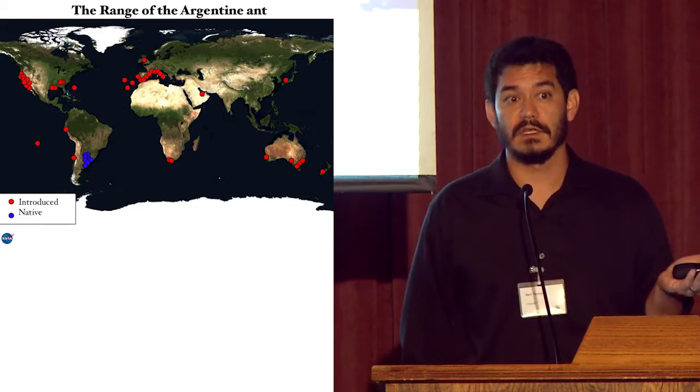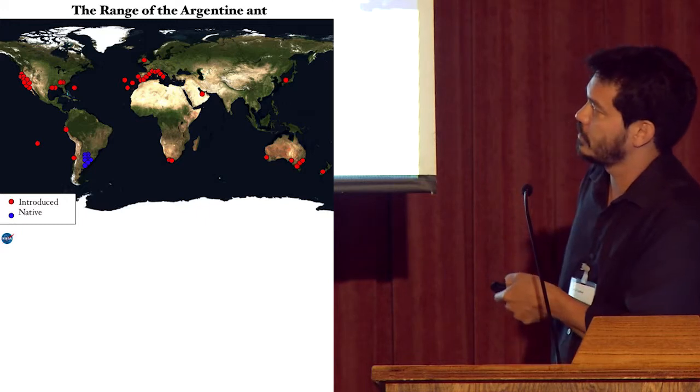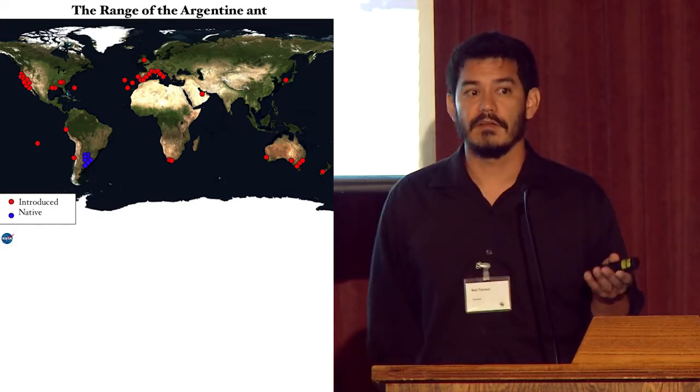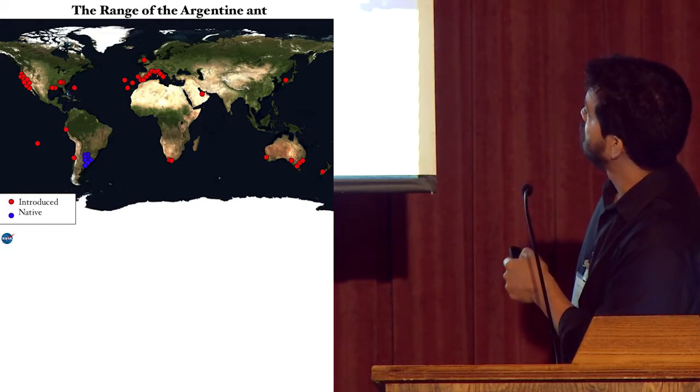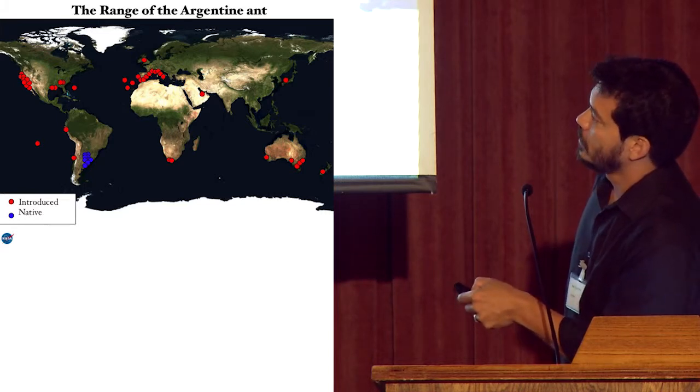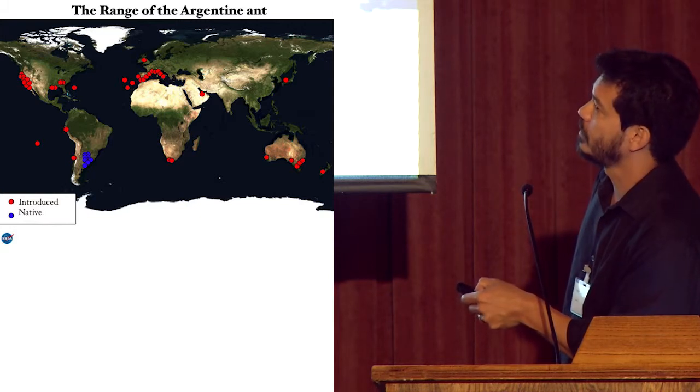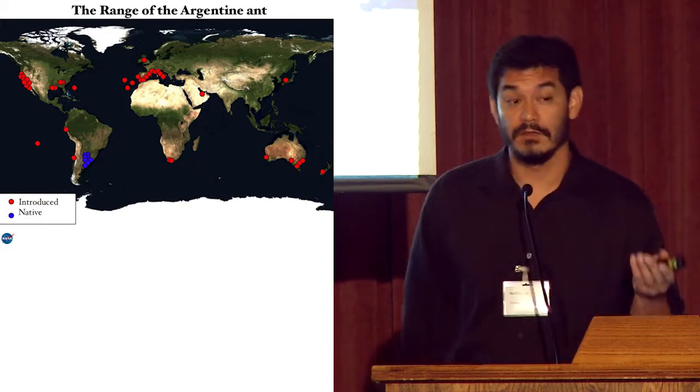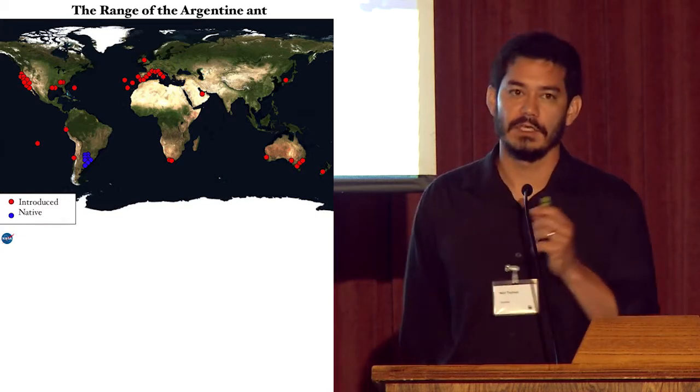All right, so the Argentine ant is the species that is the bread and butter in my lab. It's a species that occurs, as the name suggests, its native range is here in northern Argentina, southern Brazil, Uruguay, and Paraguay, and it's been introduced to pretty much every Mediterranean-type climate in the world, shown by these red circles. So it occurs in the true Mediterranean, southern Australia, New Zealand. Within the past decade, it's been introduced to Japan, many Atlantic and Pacific Islands, South Africa. It was first introduced to North America in New Orleans in the late 1800s, in the 1890s, and then pretty soon, within a few years, was introduced to California and spread throughout California.